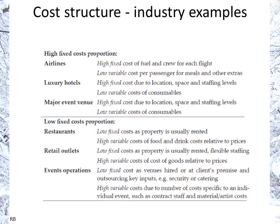Looking at industry examples, high fixed cost industries would be things such as airlines, hotels, and major event venues — they have high fixed costs just for getting the operation going. In the case of an airline, fuel and the crew for a flight represent high fixed costs, whereas you have low variable cost on a per consumer, per client, per customer basis.